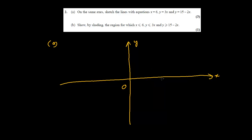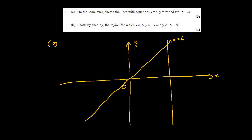Since it's a sketch, it doesn't have to be perfectly accurate. x = 6 is this vertical line — label it. y = 3x is always a line through the origin, like this. The next one is y = 15 − 2x. If we put x = 0, we get y = 15, so we mark 15 on the y-axis.